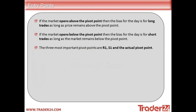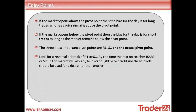If the market opens above the pivot point, then theoretically the bias for the day is for long trades as long as the price remains above the pivot point. If the market opens below the pivot point, then the bias for the day is for short trades as long as the market remains below the pivot point. The three most important pivot points are R1, S1, and the actual pivot point itself. Look for a reversal or break of the first resistance or support level. By the time the market reaches R2, R3, S2, or S3 the market will already be overbought or oversold, and these levels should be used for exits rather than entries.